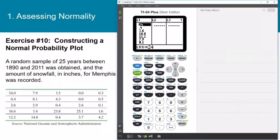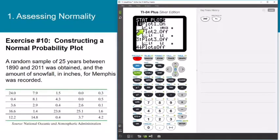Here is another example for you. This one is an exercise in your textbook. A random sample of 25 years between 1890 and 2011 was obtained, and the amount of snowfall in inches from Memphis was recorded. I've already entered these 25 values into list one. Now we can go ahead and graph this. I'm just going to open up the stat plot menu and show you that the normal probability plot is still selected. It's set to pull data from list one and plot the data on the x-axis. You really don't have to do this if you already know that the stat plot has the settings you want. From here I'm going to press graph.